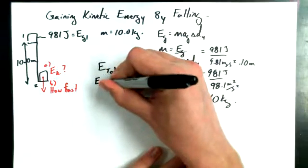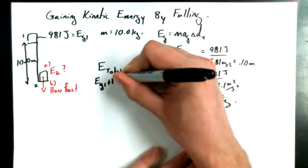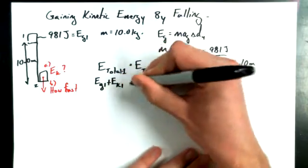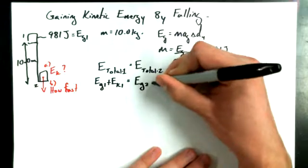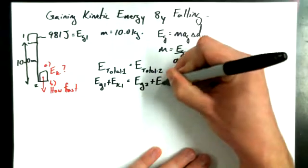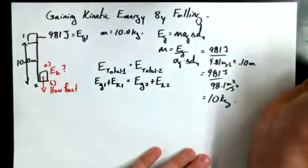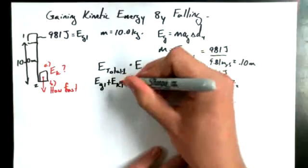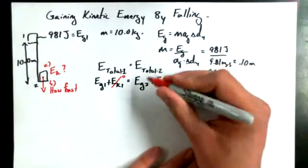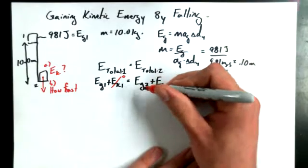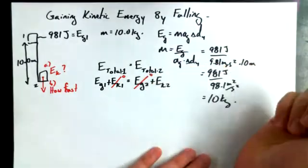Now, total energy to start with is going to be its EG plus, well, I suppose it could have kinetic energy. And total energy at the end is going to be its EG plus, I suppose it really does have kinetic energy this time. And then I can make the recognition that, okay, at the beginning, if it doesn't have any kinetic energy, that's going to 0. At the end, if it's hit in the ground at a height of 0, then that's going to be 0.